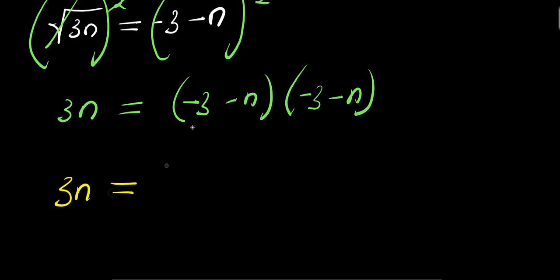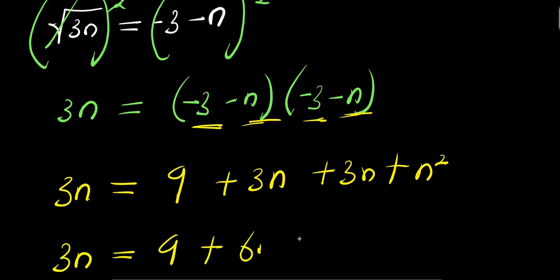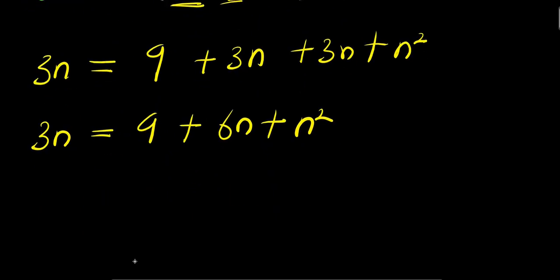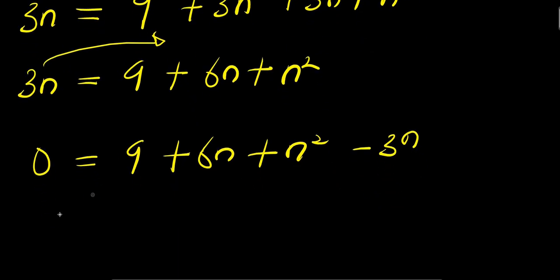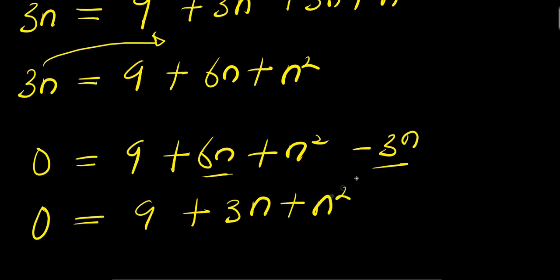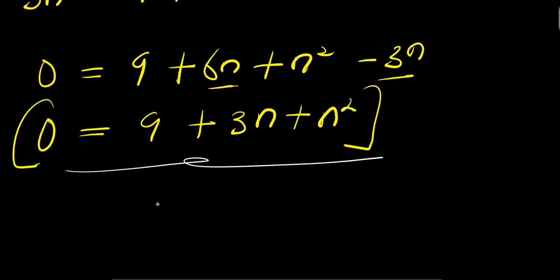We have 3n equals (negative 3 minus n) times (negative 3 minus n). Expanding: negative 3 times negative 3 is 9, negative 3 times negative n plus 3n, plus n squared. So from here we have 3n equals 9 plus 6n plus n squared. Moving terms over: 0 equals 9 plus 6n plus n squared minus 3n.